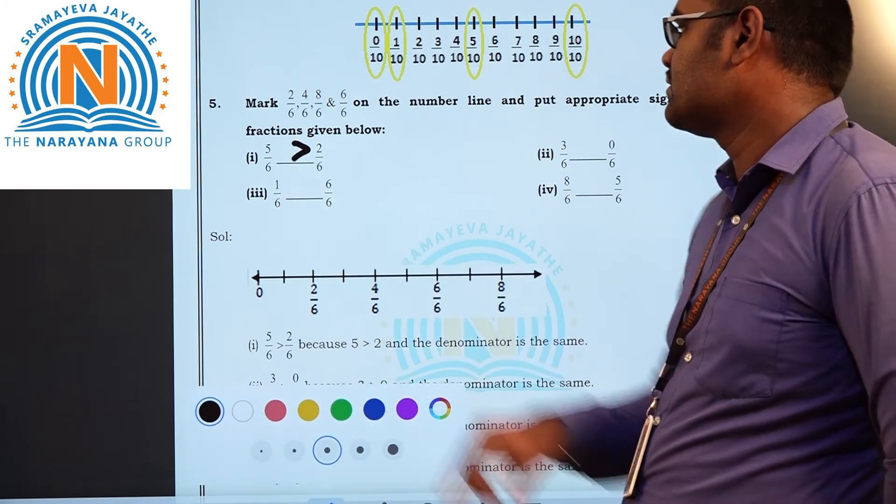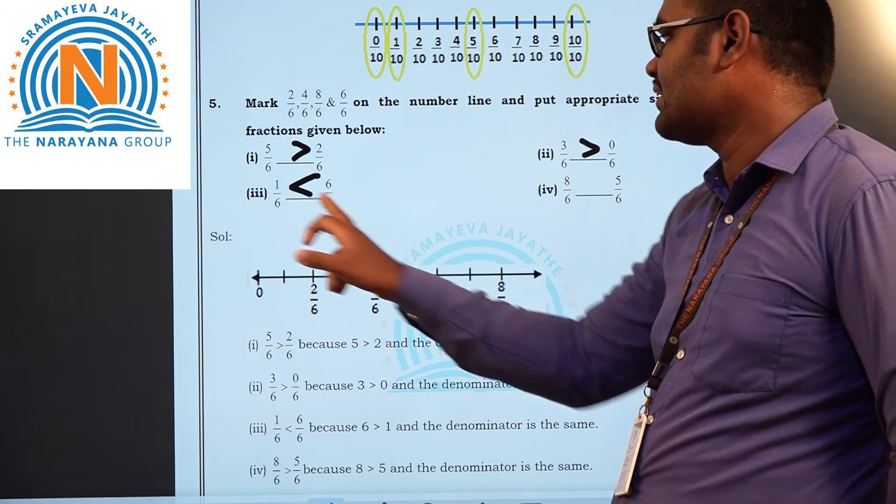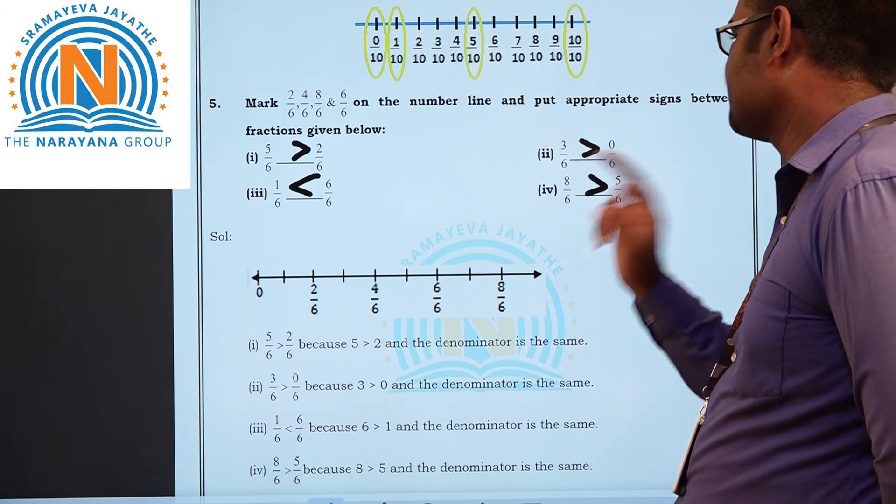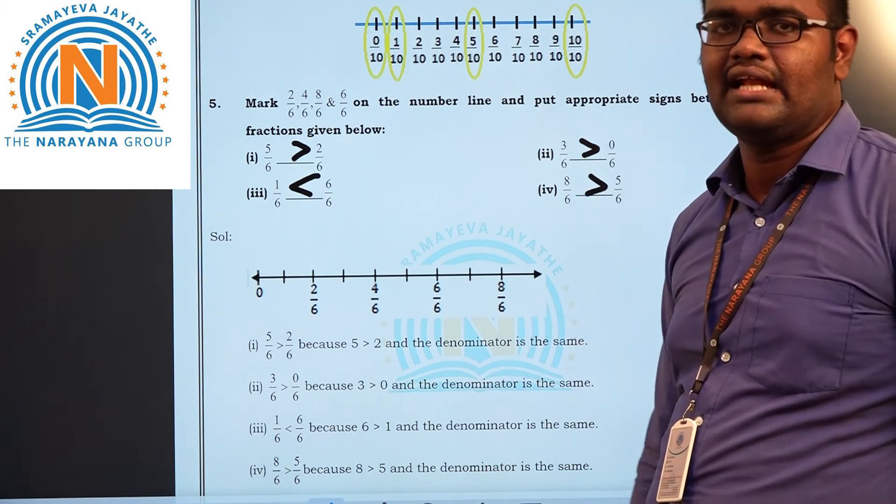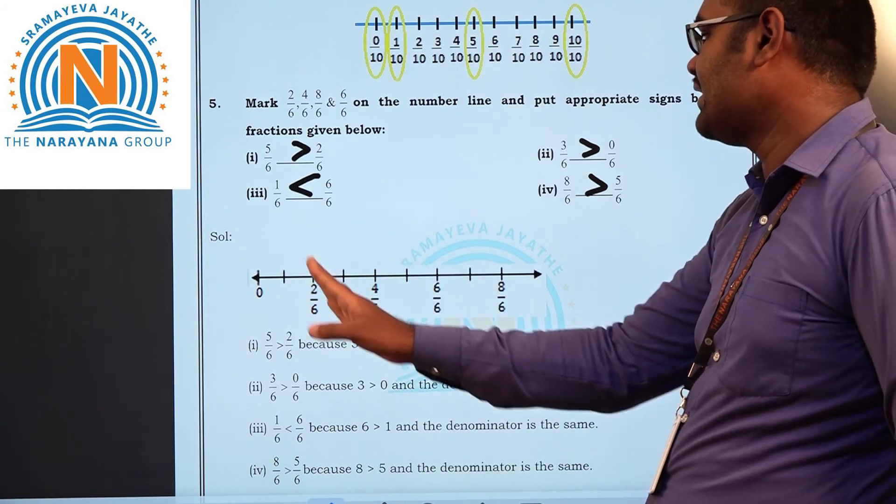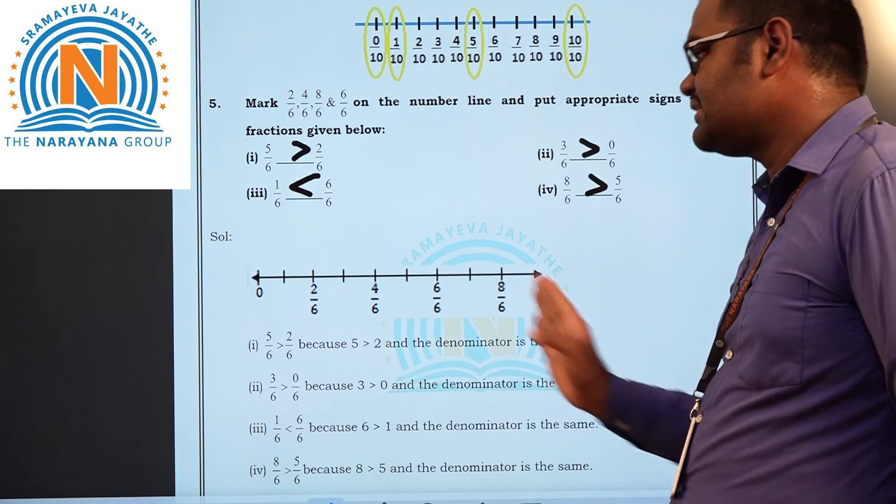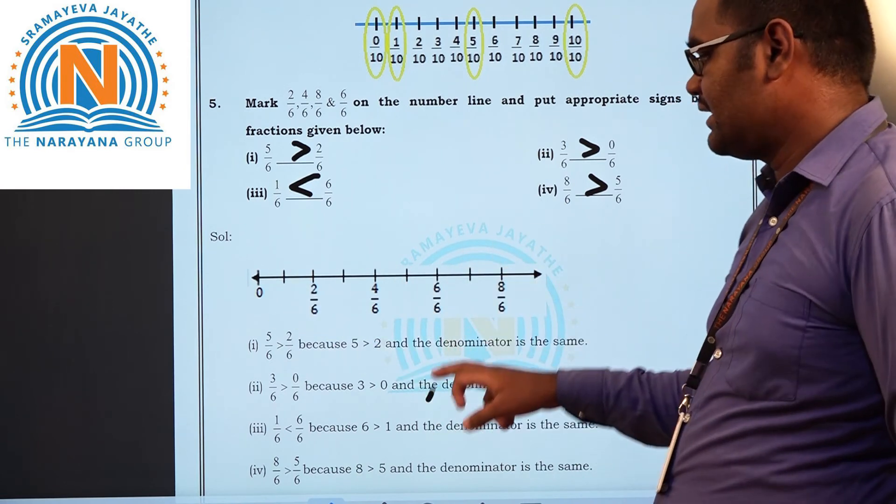Here 5 is greater number. Here 3 is greater number. Here 6 is greater number. Here 8 is greater number. See, very easily we can put the sign if the denominators are same. If we represent the number line, write 0 to 6, what 8, 7, 8, since 8 is the greatest number. If we divide all the numbers by 6, you will get the numbers on the number line. Clear students?